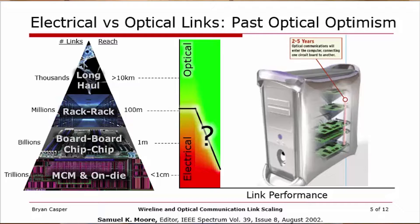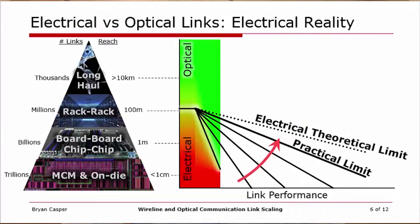Those predictions didn't come to pass as quickly as many would have liked. One reason is that what was perceived as the limit on electrical actually wasn't. Many technologies were developed by researchers over the last several years that pushed beyond the 3D bandwidth of traditional electrical channels, improving and optimizing those channels such that data rates extended from a few gigabits per second to now over 100 gigabits per second being demonstrated in full-link electrical links.